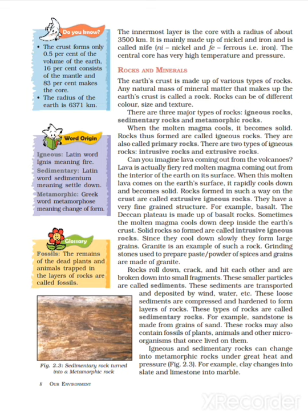The first type is igneous rock. The word igneous comes from a Latin word meaning fire. When molten magma cools down, it solidifies to form igneous rocks. These are also known as primary rocks. There are two types of igneous rocks: intrusive rock and extrusive rock.